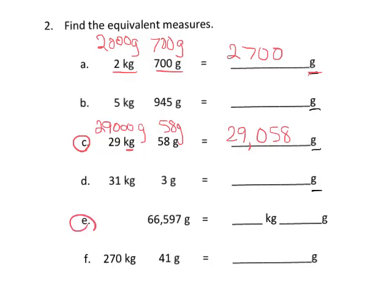And then let's take a look at E. E is going in reverse. We have 66,597 grams. So these 66,000, that's going to be 66 kilograms. And then we have 597 grams left over. So the answer is 66 kilograms, 597 grams.